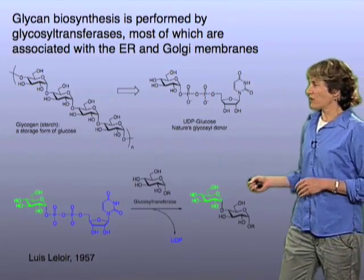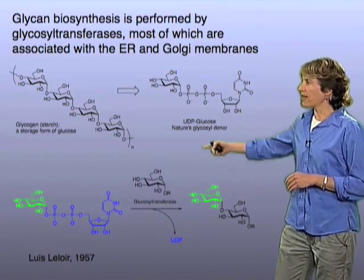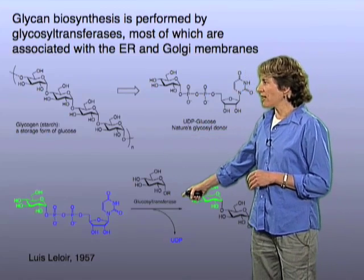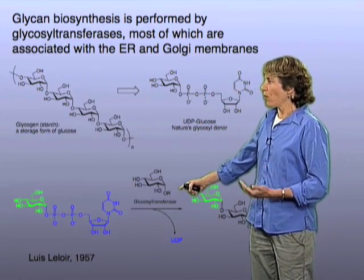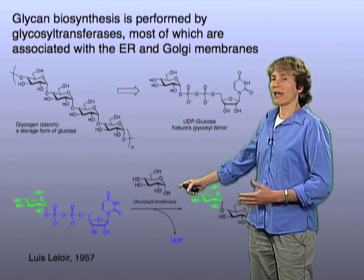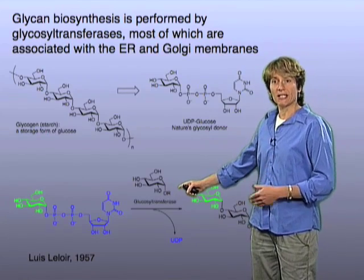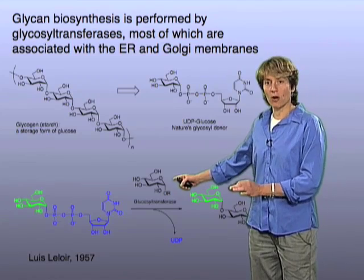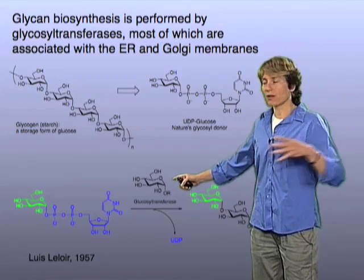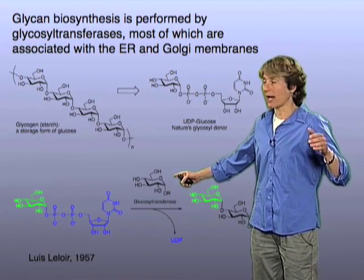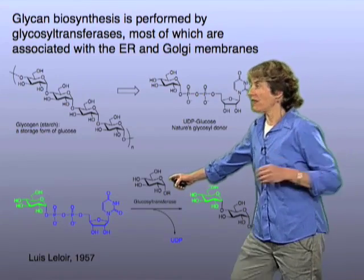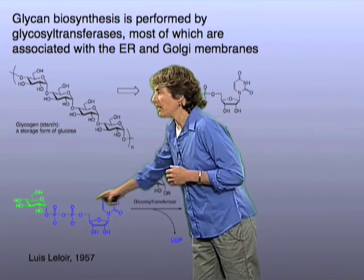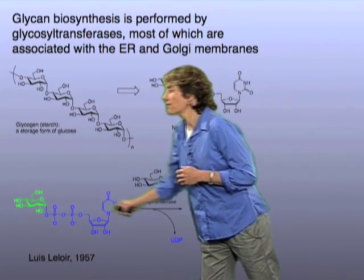In the forward sense, glycogen is assembled through the action of an enzyme classified as a glucosyl transferase — it transfers a glucose onto the growing polysaccharide. The substrate it uses is, again, UDP-glucose.